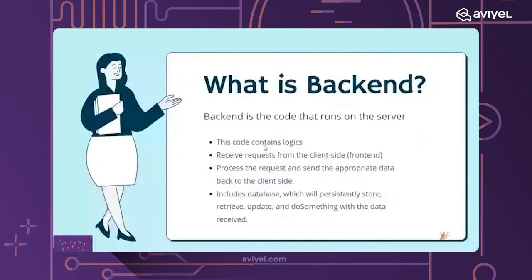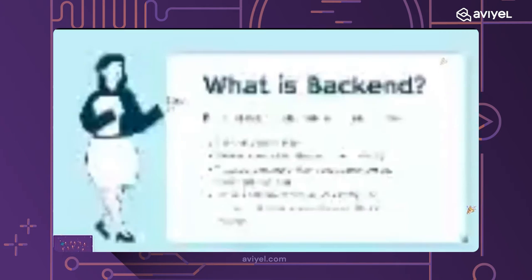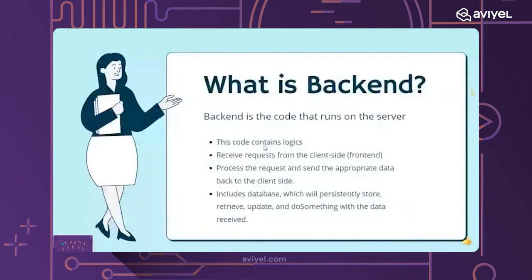The backend receives requests, processes them based on the logic you as a backend developer have defined, and then sends the appropriate data back to the front end. This data can be an object or a string, just to notify the front end about what happened. If a request comes in, two outcomes are possible: the request is successful or the request failed. The backend should send back a success response or a bad request response.